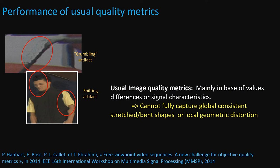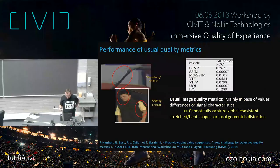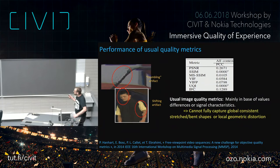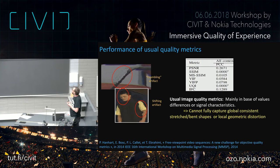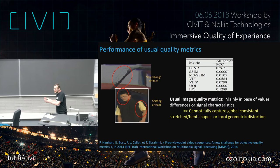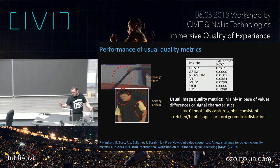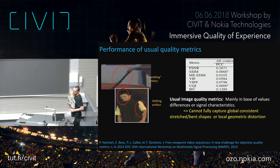The idea in our first dataset was to check what is the effect of DIBR algorithms when we have two reference views. We can play with the baseline between these two reference views and try to generate intermediate views. In that case, the artifacts come only from the synthesis algorithm — still images, time-frozen, looking at the effect of this DIBR algorithm. These DIBR algorithms can introduce very strange artifacts like shifting artifacts and crumbling artifacts — things that are not usual in previously considered image and video quality assessment scenarios. Image quality metrics are mainly based on pixel-based signal characteristics and cannot fully capture this type of artifact. If you look at their correlation with human mean opinion score, they miserably fail — correlation is not more than 0.3.